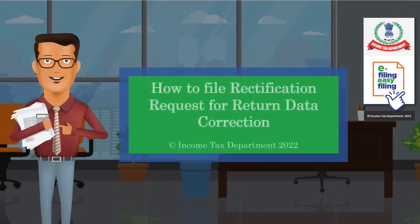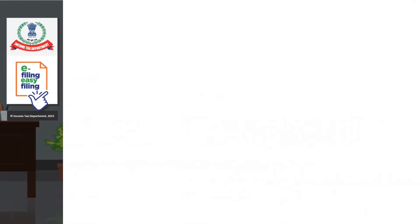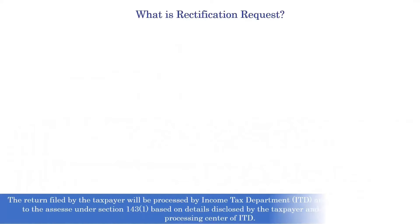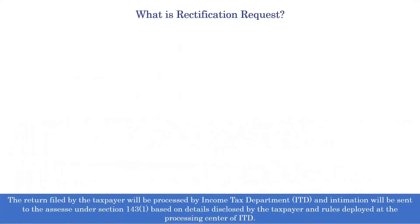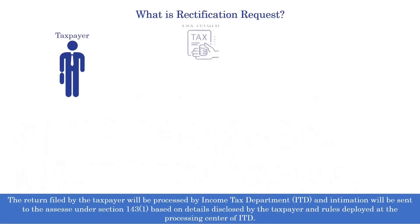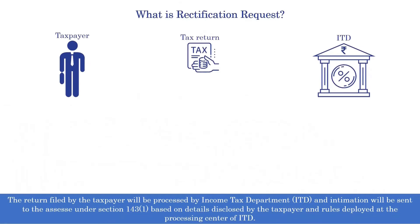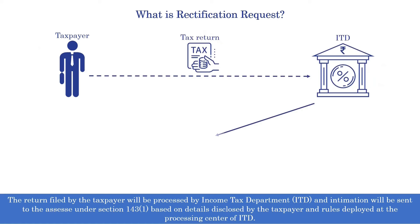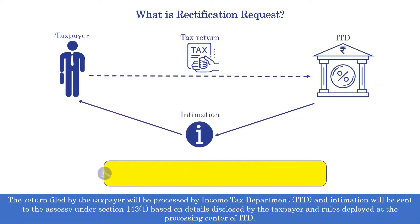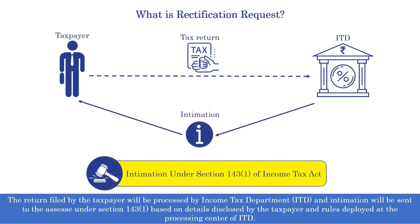This video is on how to file a rectification request for return data correction. Let us first see what a rectification request is. When a return is filed by a taxpayer, it is processed by the income tax department and an intimation is sent to the taxpayer under Section 143(1), based on the details disclosed by the taxpayer.